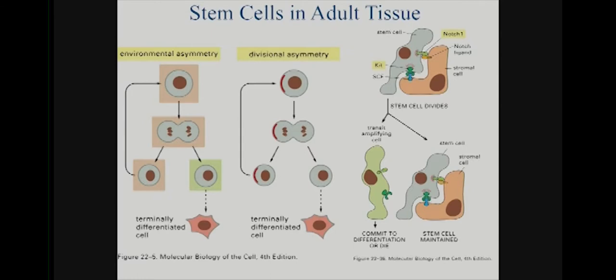Classic stem cell niches have been characterized where it's pretty clear there is a correct environmental interaction. Some of those signals include SCF-kit interaction and Notch ligand interaction. Stromal cells — neither the stem nor the daughter cells but support cells in that niche — provide the signal. Cells that are still attached to the stromal cell and engaged in these interactions are protected from going down the differentiate-or-die pathway, whereas the daughter cell that happens not to be in contact will end up going down the differentiation pathway.